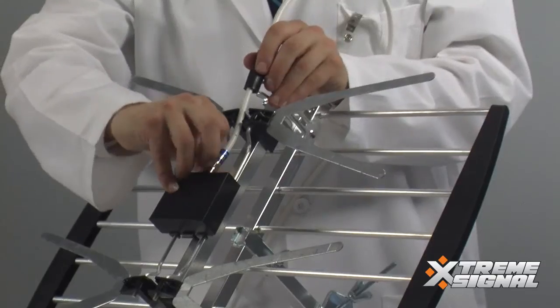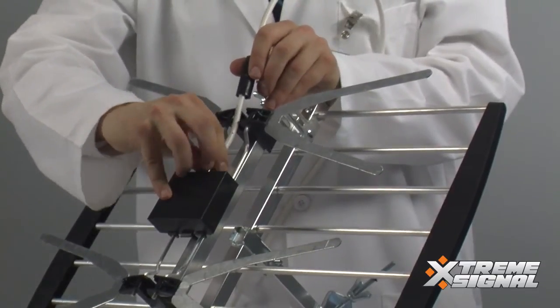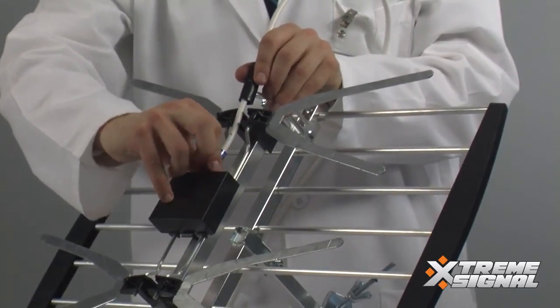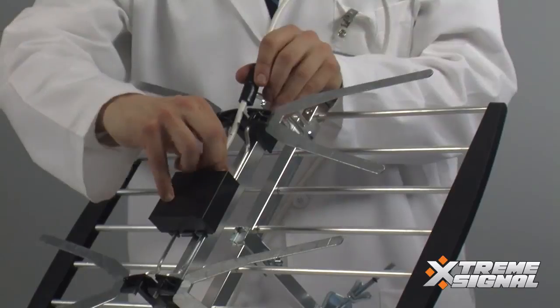Once you've assembled the antenna, you can go ahead and connect your cable. The cable connection is right here on this little black box. And if you're making your own cable, you can use the included weather boot to slip on for a nice weather-tight connection.